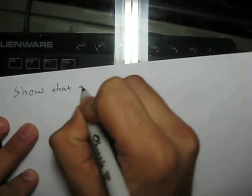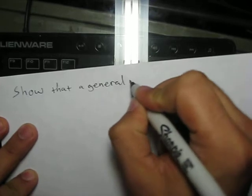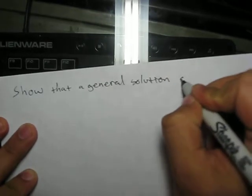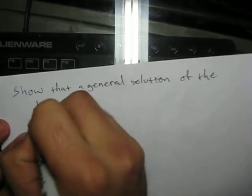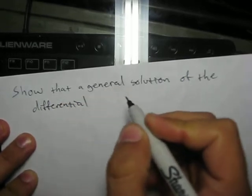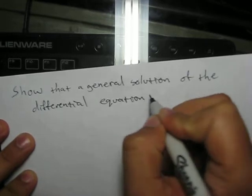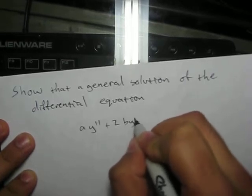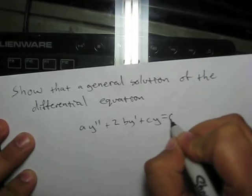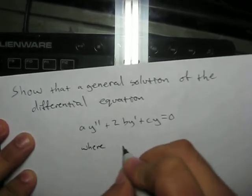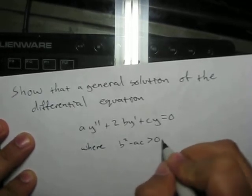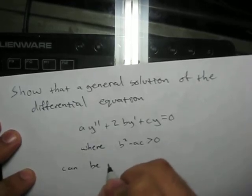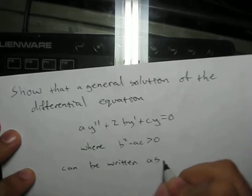We want to show that a general solution of the differential equation a*y'' + 2b*y' + cy = 0, where b² minus ac is greater than 0, can be written as the following form.